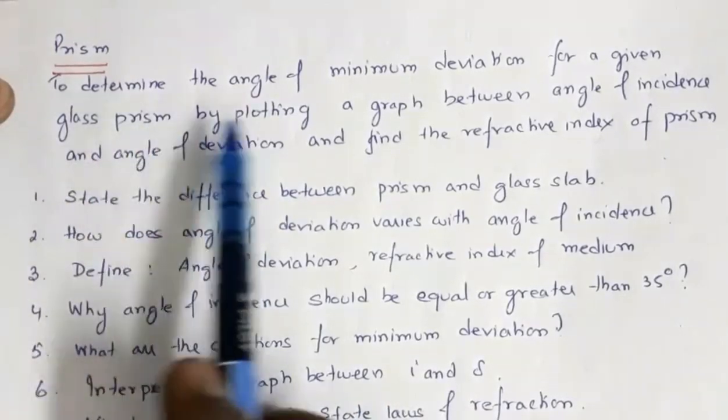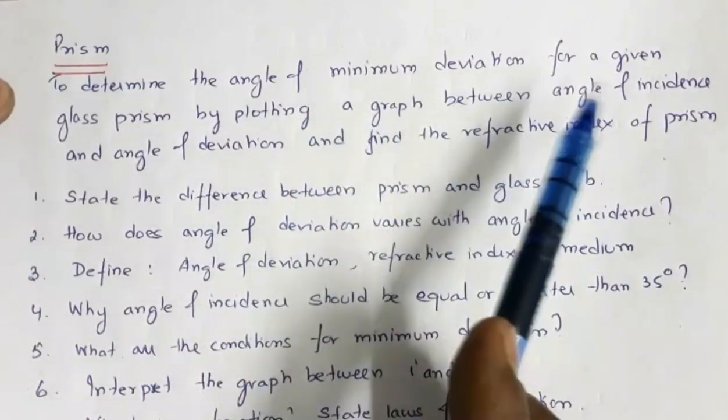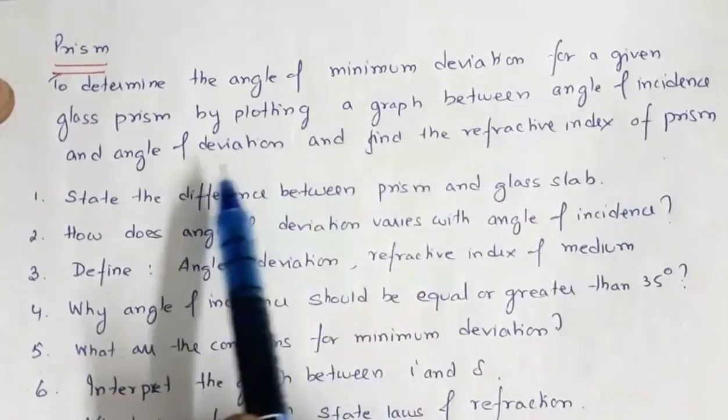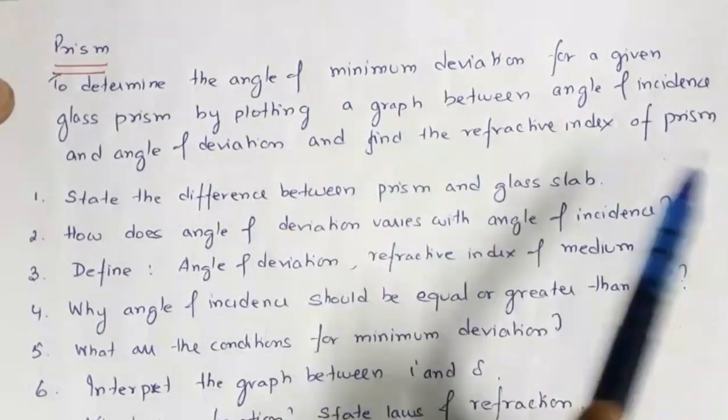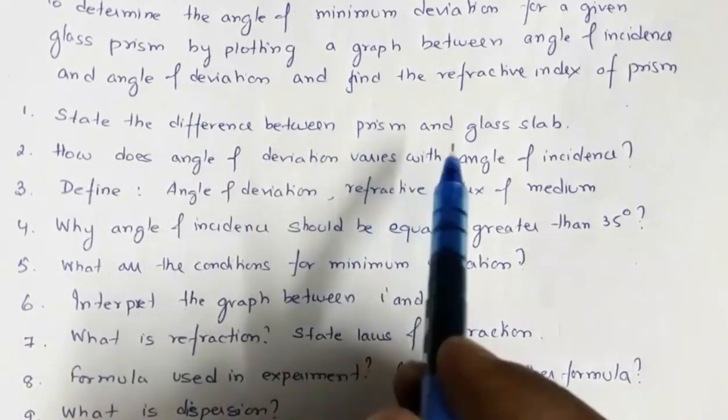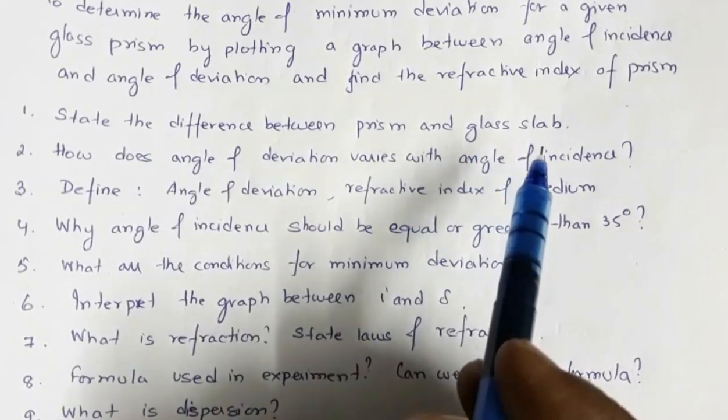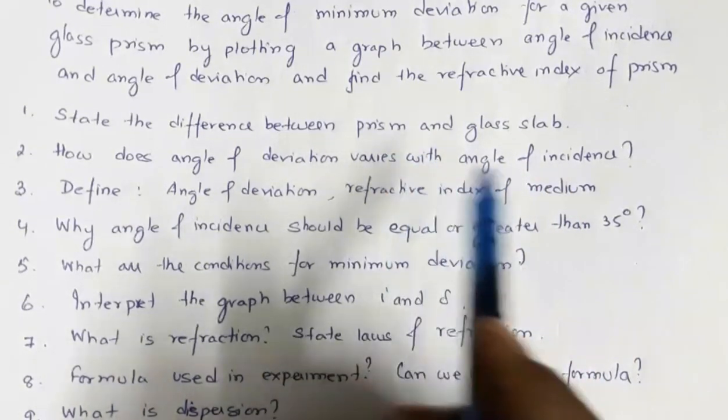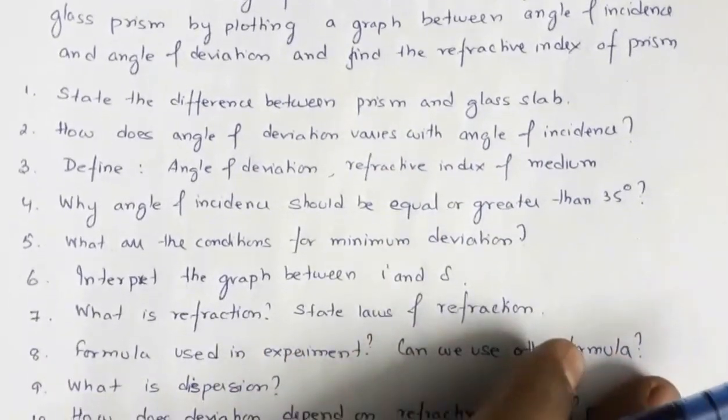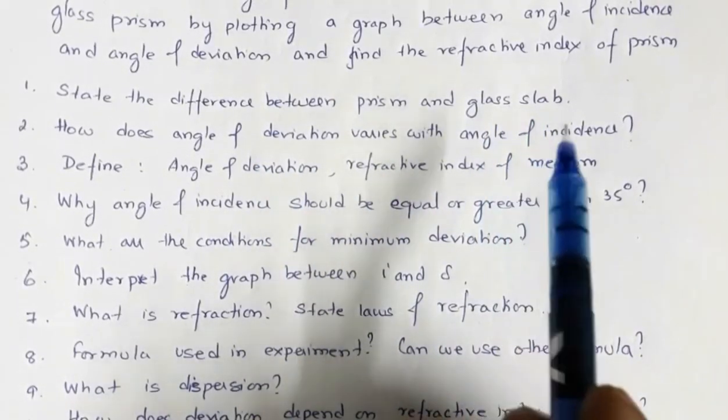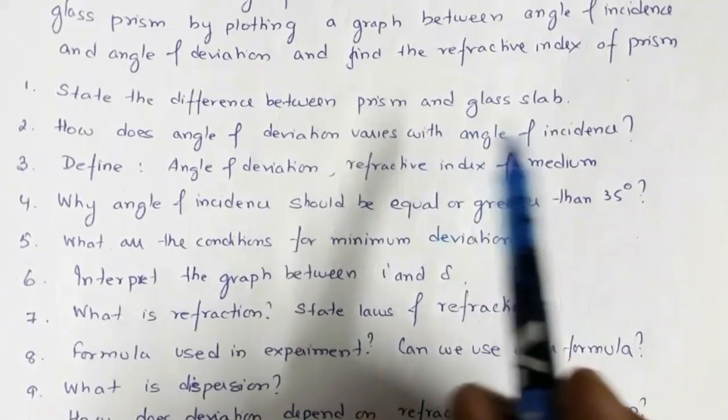Next is prism to determine the angle of minimum deviation for a given glass prism by plotting a graph between angle of incidence and angle of deviation and find the refractive index. The basic question they may ask is state the difference between a prism and a glass slab. A glass slab, it deviates light and prism, it disperses light, and there is also difference in the shape of the two, the geometry of the two.